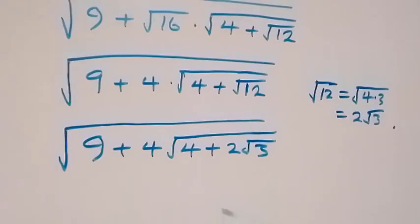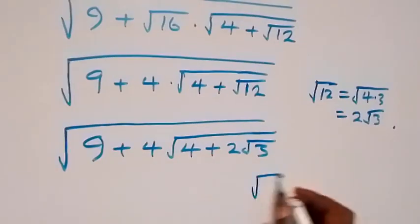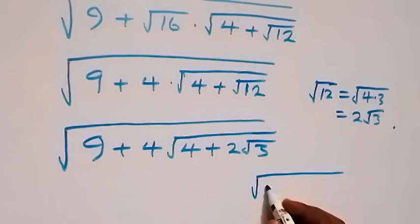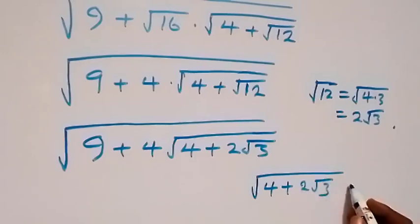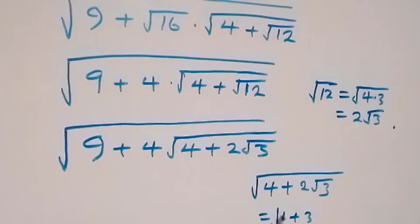So we now have square root of 9 plus 4 plus 2 root 3. We can write 4 plus 2 root 3 as root 4 plus 2 root 3. This can be written the same thing as 1 plus 3, that's square root of 1 plus 3 plus 2 times 1 times root 3.